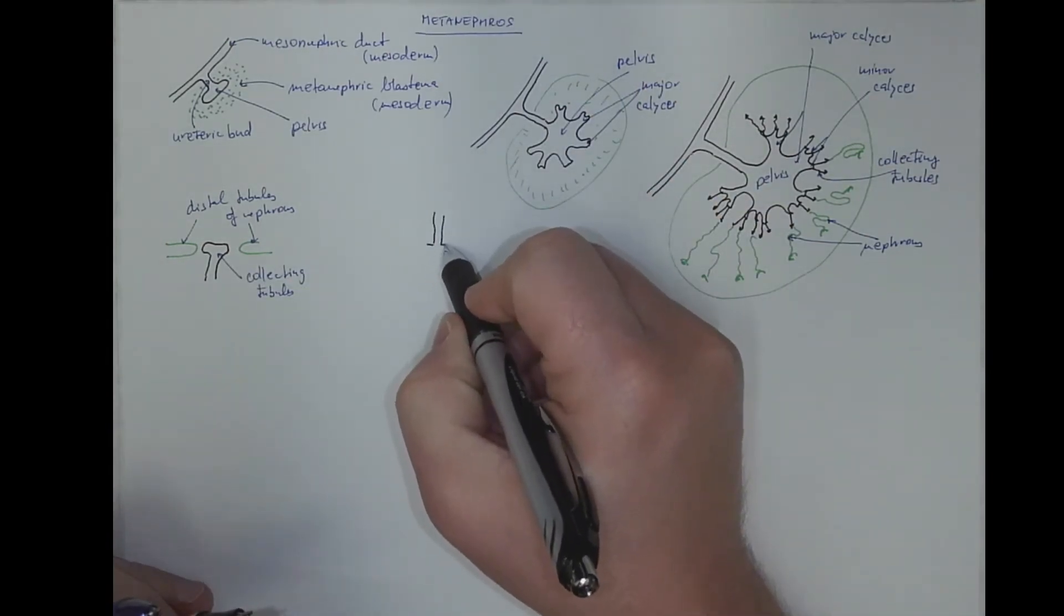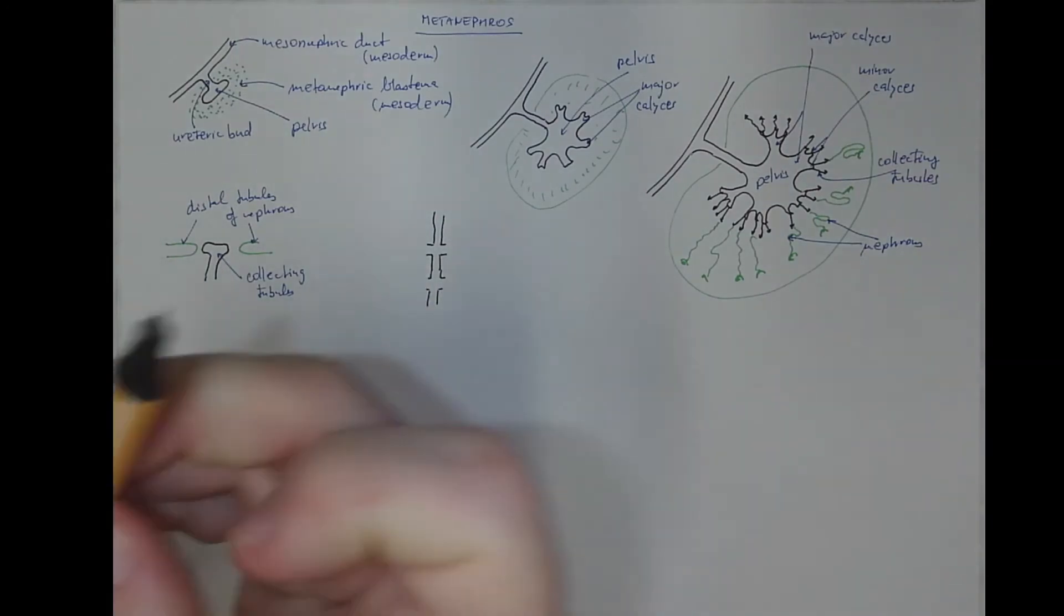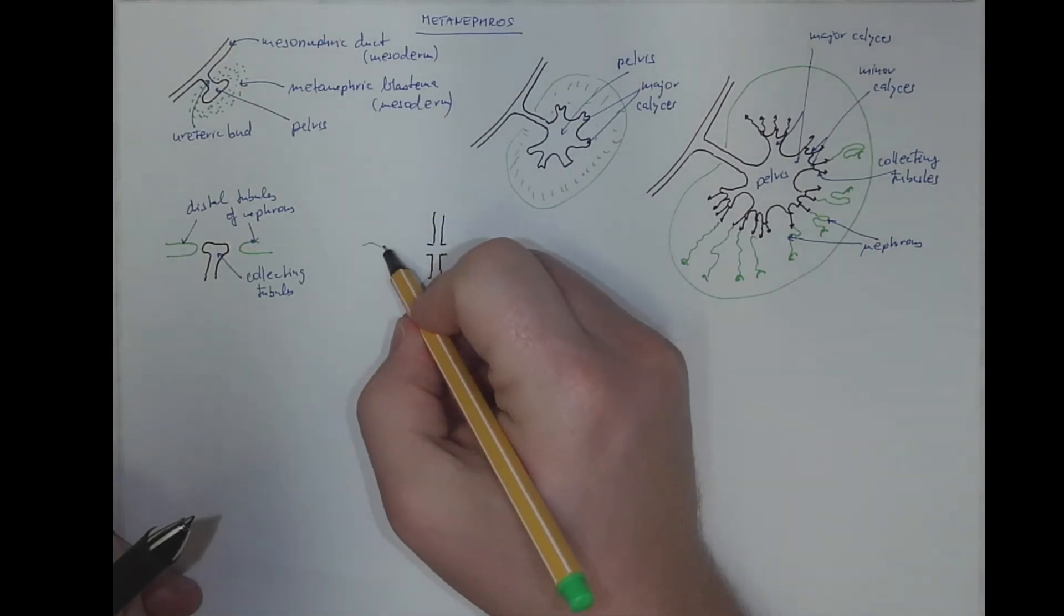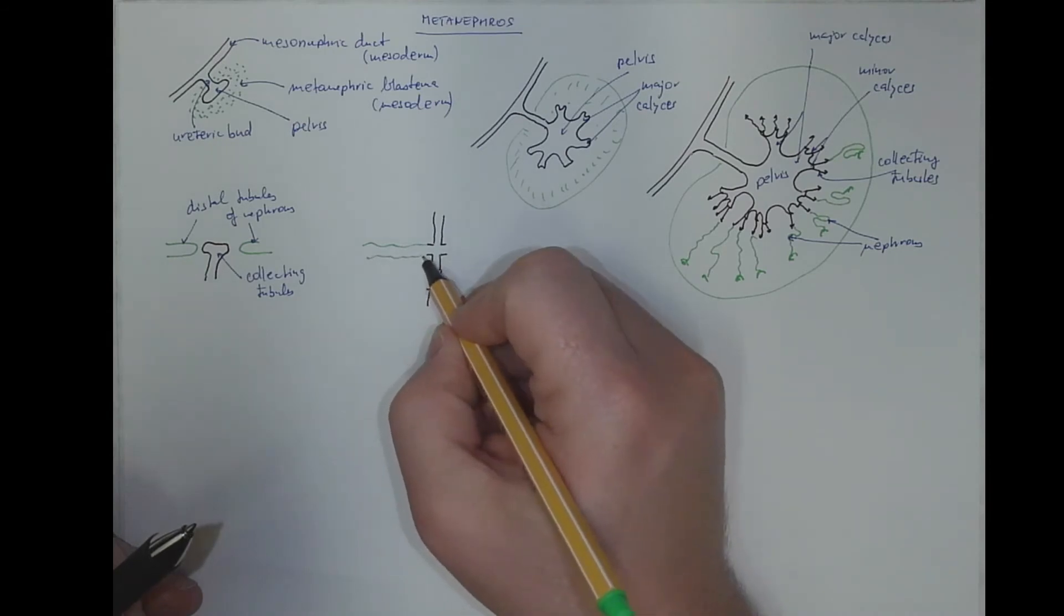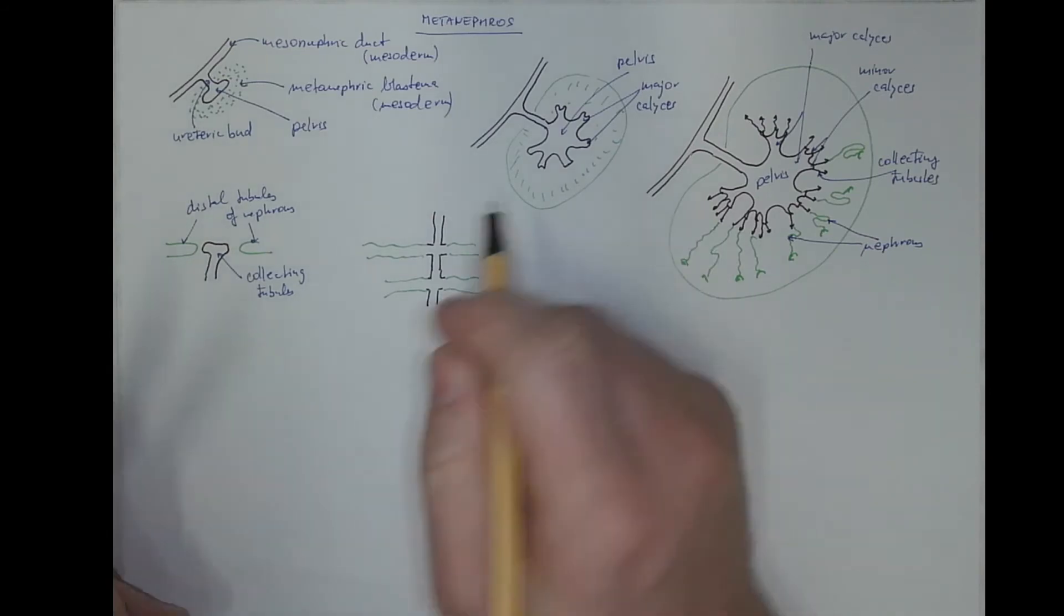And finally, one collecting tubule will receive the distal tubules from a number of nephrons.